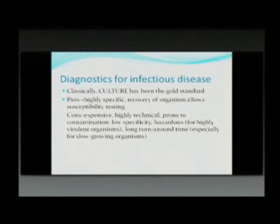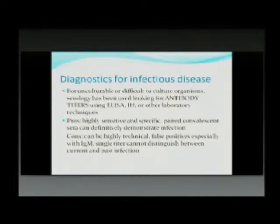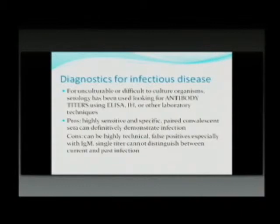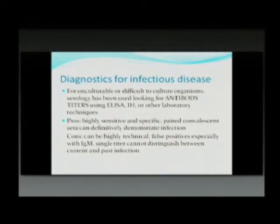For unculturable or difficult-to-culture organisms, traditionally we've looked at antibody titers using ELISA, direct hemagglutination, or other laboratory techniques. These have been highly sensitive and specific and fairly successful. But they typically require paired convalescent sera, where you actually demonstrate an increase in titers to definitively demonstrate infection. False positives can occur, especially when dealing with IgM, which is very sticky because it's a pentamer. Many of us have had cases where both the IgM for typhoid and dengue are positive, and you're not really sure what to do with those.